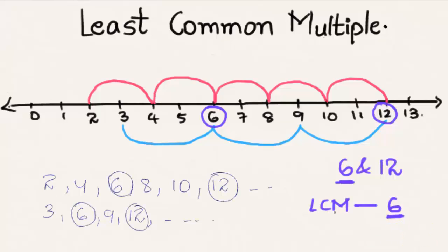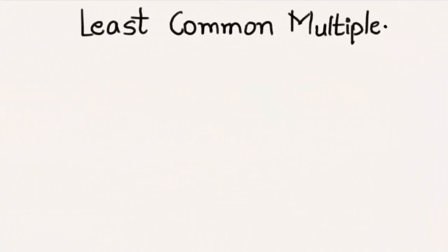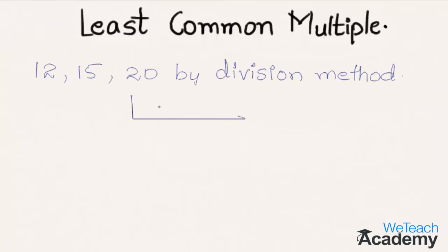We can say that the least common multiple of 2 and 3 is 6. Now, the least common multiple can also be found by using the division method. Let us consider three numbers and find the least common multiple using this method. We will use the numbers 12, 15, and 20.